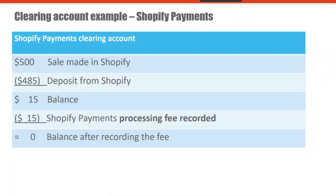Let's go through a quick review of how payment processor clearing accounts work. In a very simple example, if you have a sale from Shopify for $500, you'll receive a deposit from Shopify that is net of fees. Let's say that you received $485 — that leaves you a balance of $15 in the clearing account. We need to do something with that $15 in order to remove it from the Shopify payments clearing account.